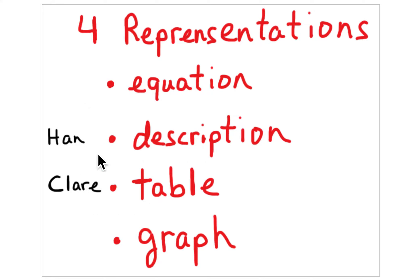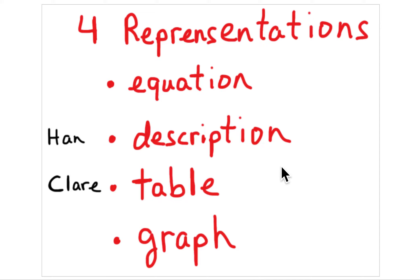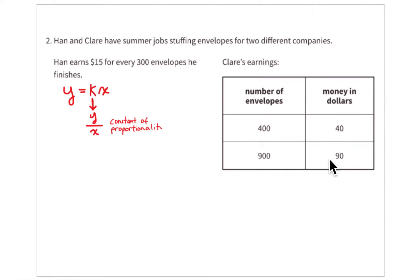Your task is to bring these two representations together so you can figure out who makes more money, what the unit rate or rate of change is, and how much each one makes if they stuff 1,500 envelopes. First, let's work through the information we know, beginning with Han and getting to his equation.